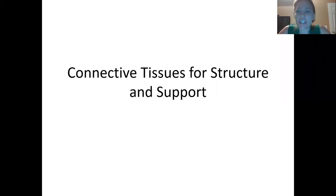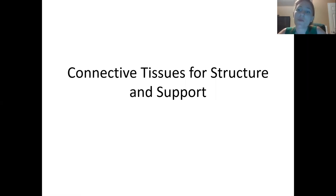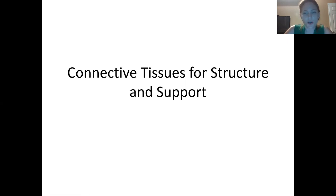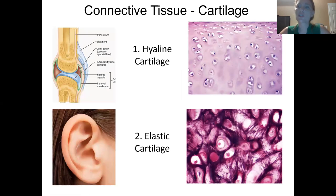Here we are on the last little bit of connective tissue — we're talking about the specialized connective tissues, the ones that don't really connect one tissue to another tissue. We're going to start with ones that are involved in creating support and structures, starting with cartilages. There are three different cartilages.